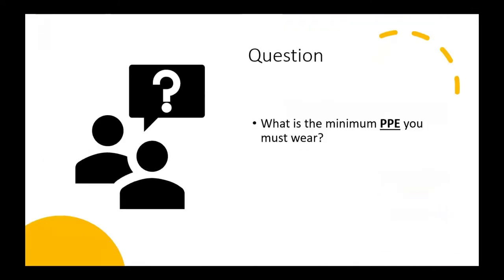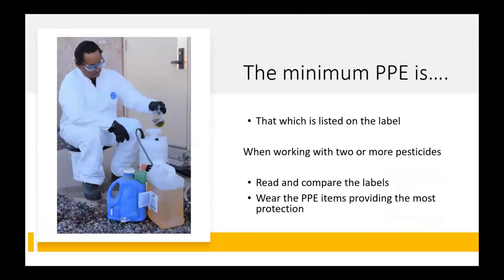What's the minimum PPE you must wear? The minimum PPE is that which is listed on the label for the task you're performing. If you're working with two pesticides at the same time, such as when tank mixing, compare the labels and wear the items that offer the most protection. For example, if one label says to wear shoes and socks and the other says to wear chemical-resistant footwear, then you must wear the chemical-resistant footwear.